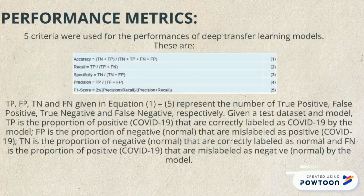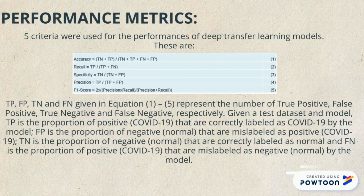Performance: the performance describes how well our model works and there are five criteria for choosing the performance. TP indicates the properties of COVID-19 correctly labeled, FP indicates the proportion of normal cases mislabeled as positive, TN denotes the proportion of normal cases that are correctly labeled, and FN accordingly.